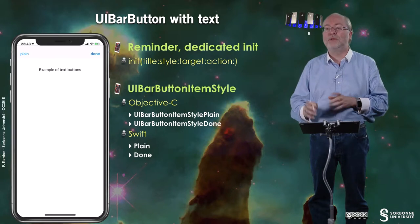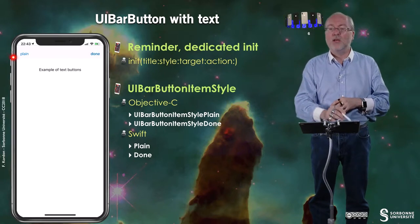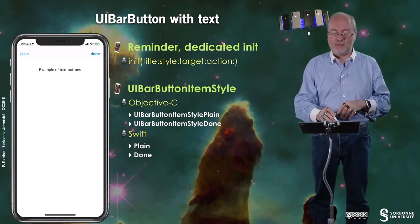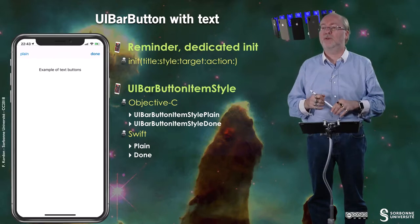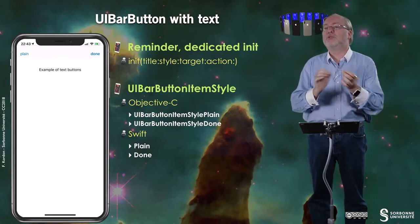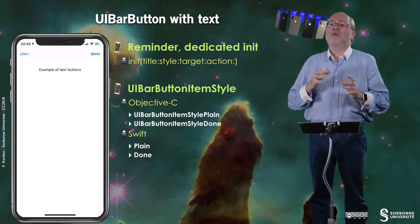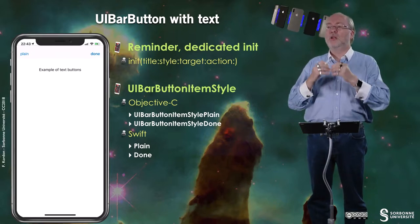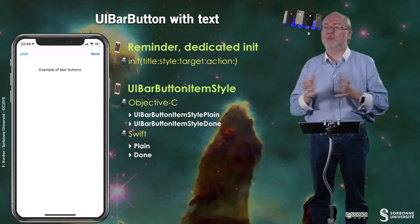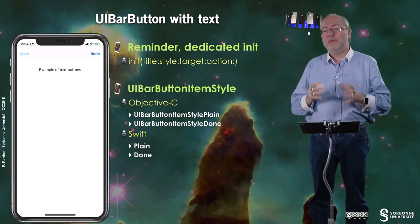If you have a UIBarButton with text, you have a dedicated initializer. You can have style plain or style done. To be honest, now they have the same appearance, except that one is in bold characters and the other is in plain characters. Usually you use the bold one for the action that corresponds to ending or completing what you are doing. Of course you can change this, but be careful because Apple is very cautious about the look and feel and behavior of your apps, so staying close to the default look is better.